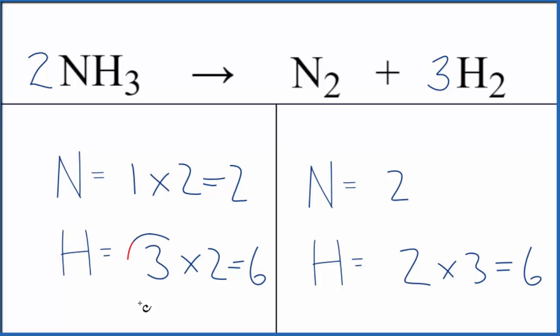So really the trick here is we have that odd number, that three. We just put a coefficient of two in front of the ammonia and that seemed to solve our problems.